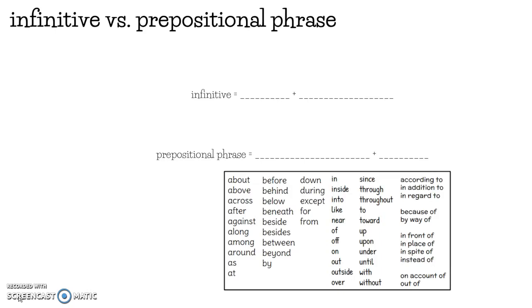Last week, we started looking at infinitives and prepositional phrases as we were looking at marking out imposters in order to find the subject and verb. We had a little bit of trouble in the workbook, so we thought it might be a good idea to do a quick review lesson. What you need in front of you is the paper that your teacher gave you and a writing utensil. As I go through these strategies and mark things off, you're going to do the same things on your paper.